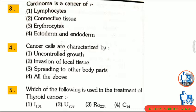Question 3: Carcinoma is a cancer of — first, lymphocytes; second, connective tissue; third, erythrocytes; fourth, ectoderm and endoderm. The correct answer is option 4: ectoderm and endoderm.